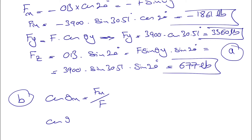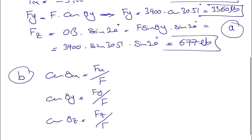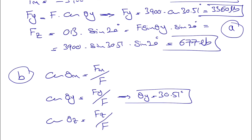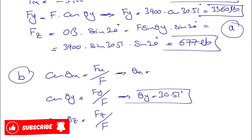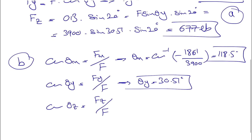For part B we need to find the angles with each axis. The cosine of theta_x equals Fx/F, cosine of theta_y equals Fy/F, and cosine of theta_z equals Fz/F. We already know theta_y is 30.51 degrees from the geometry. For theta_x, we take the inverse cosine of Fx/F = -1861/3900, which gives us 118.5 degrees.